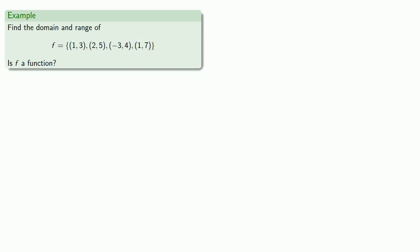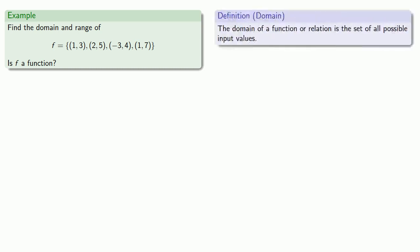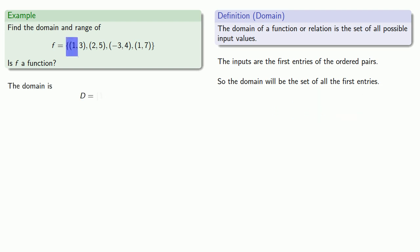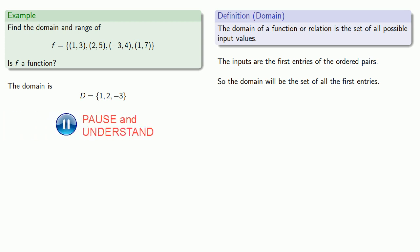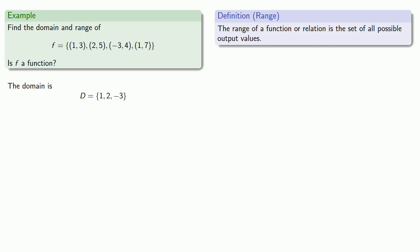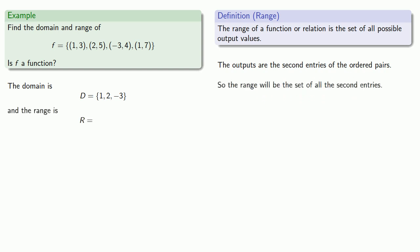If we have a function or relation given as a list of ordered pairs, we can find the domain and range and then decide whether we have a function. The domain is the set of all possible input values — the first entries of all the ordered pairs. Our first entries are 1, 2, negative 3, and 1 again, but we don't list any element twice, so the domain is {1, 2, negative 3}. The range is the set of all possible output values — the second entries — giving us {3, 5, 4, 7}.